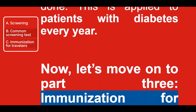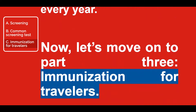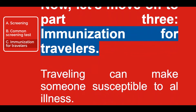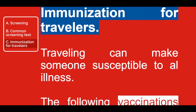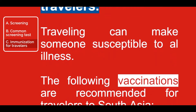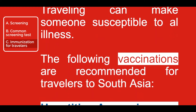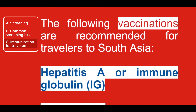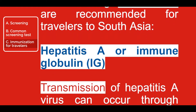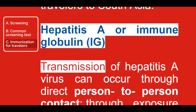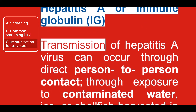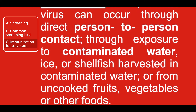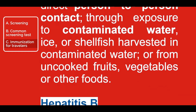Now let's move on to Part 3, immunization for travelers. Traveling can make someone susceptible to an illness. The following vaccinations are recommended for travelers to South Asia. Hepatitis A or Immunoglobulin: transmission of the hepatitis A virus can occur through direct person-to-person contact, through exposure to contaminated water, ice, or shellfish harvested in contaminated water, or from uncooked fruits, vegetables, or other foods.